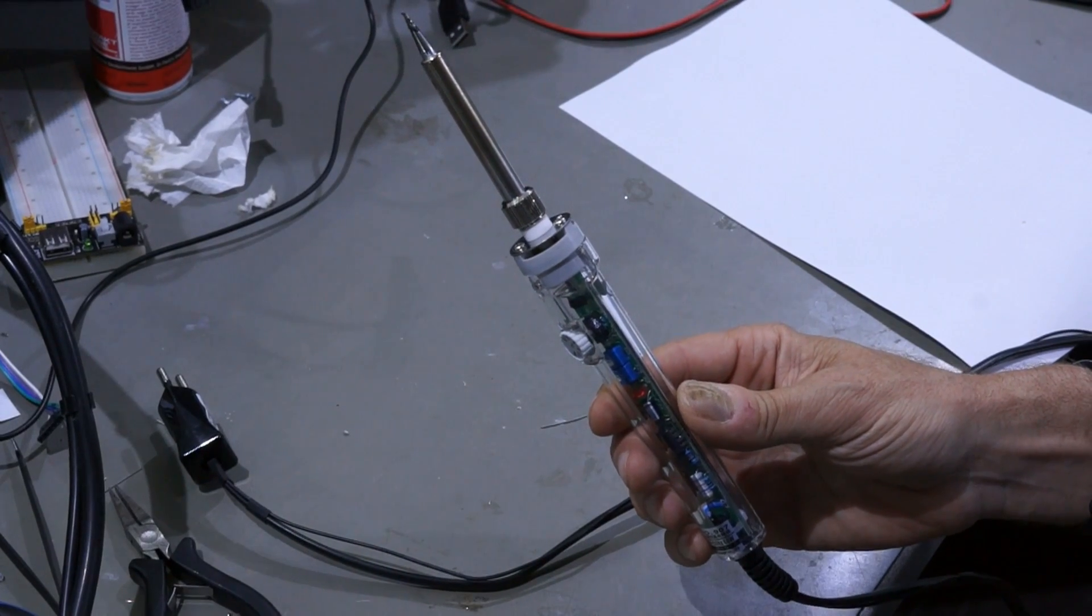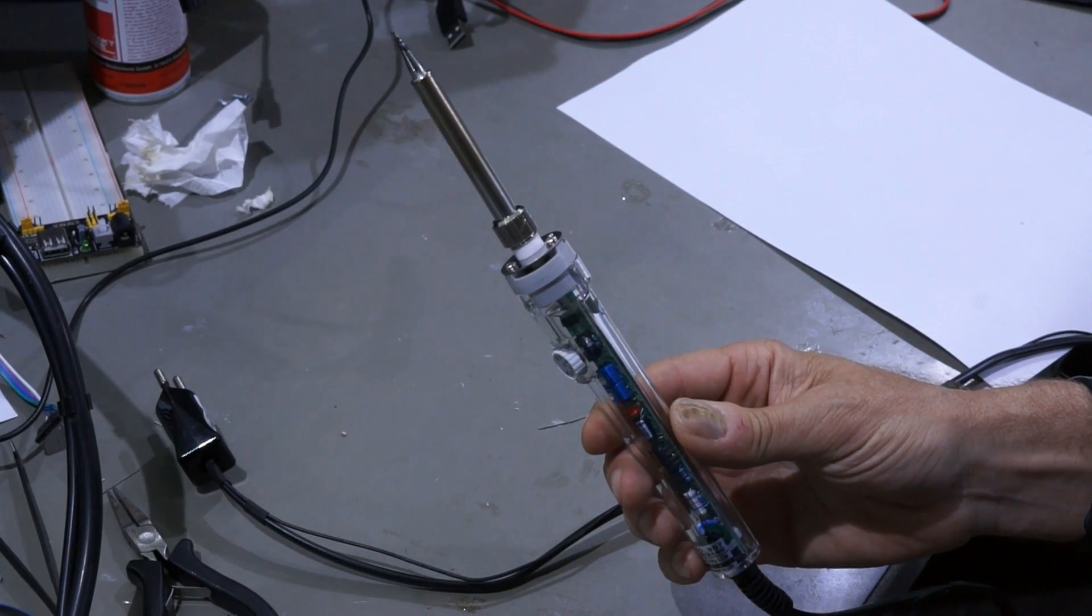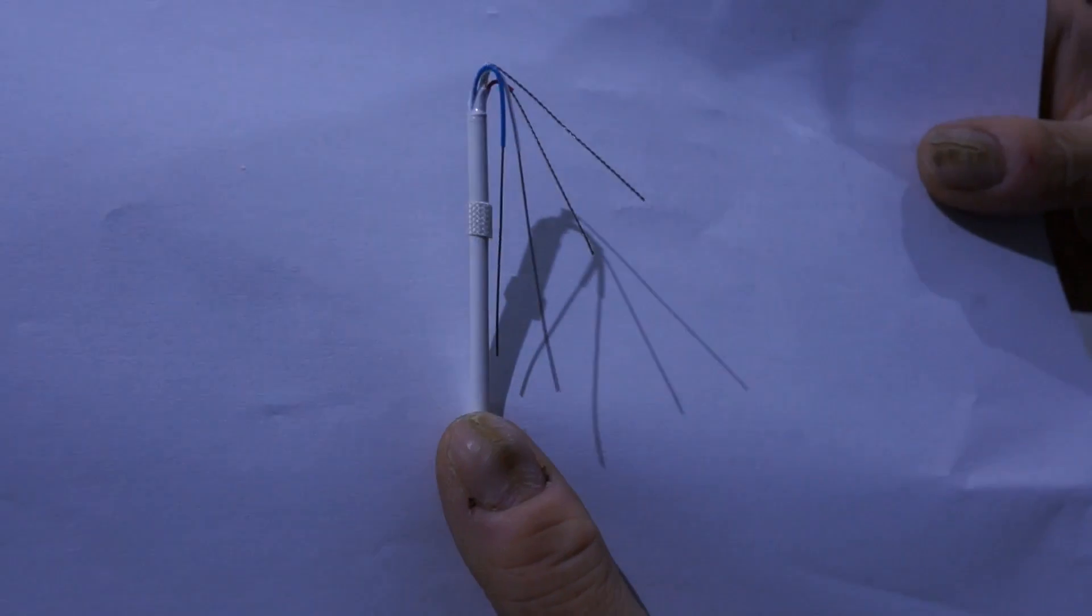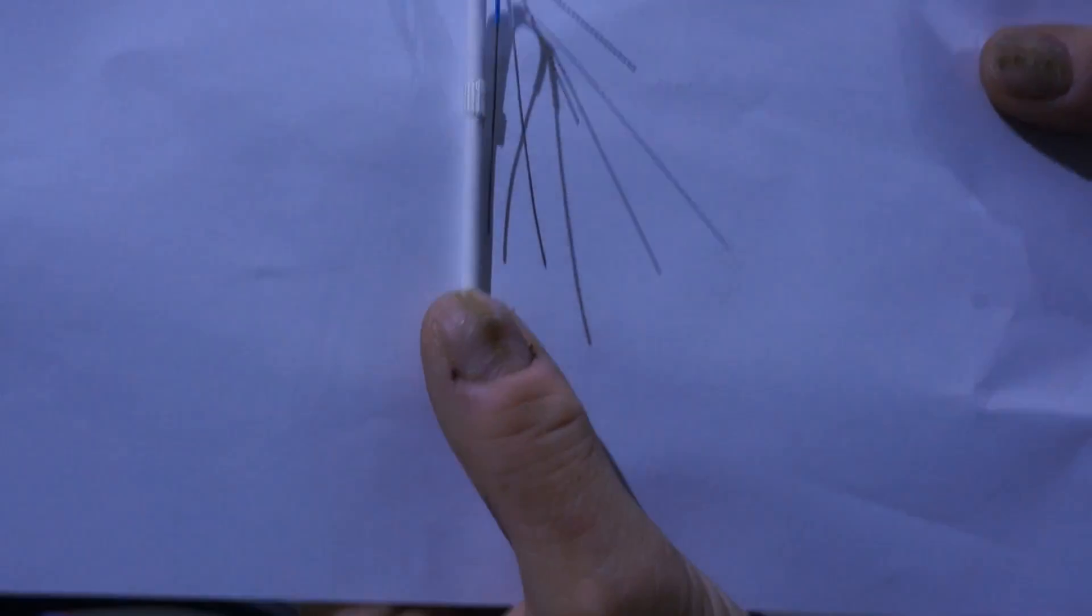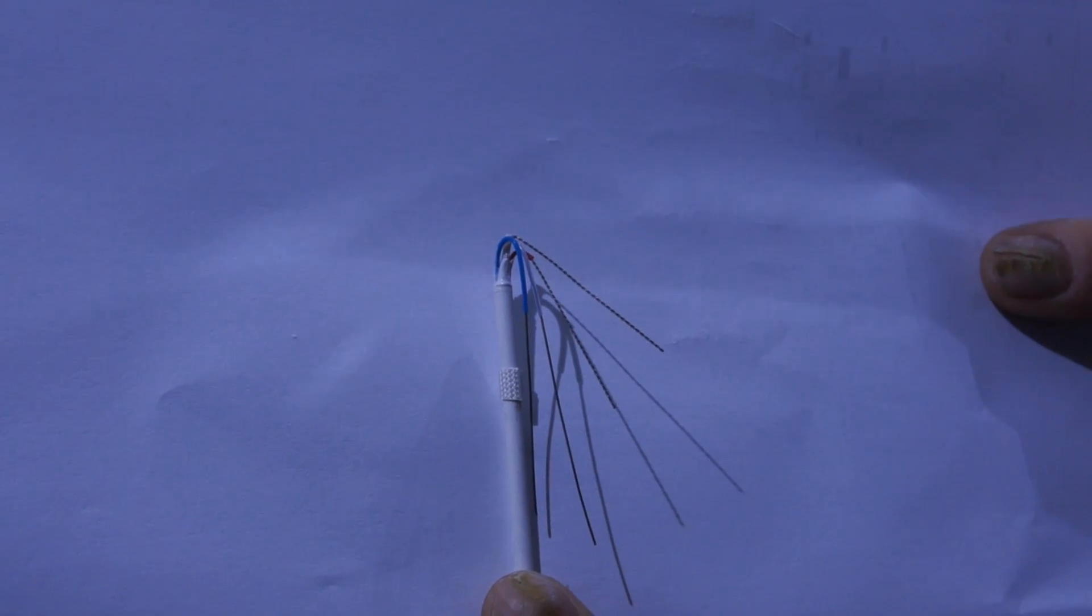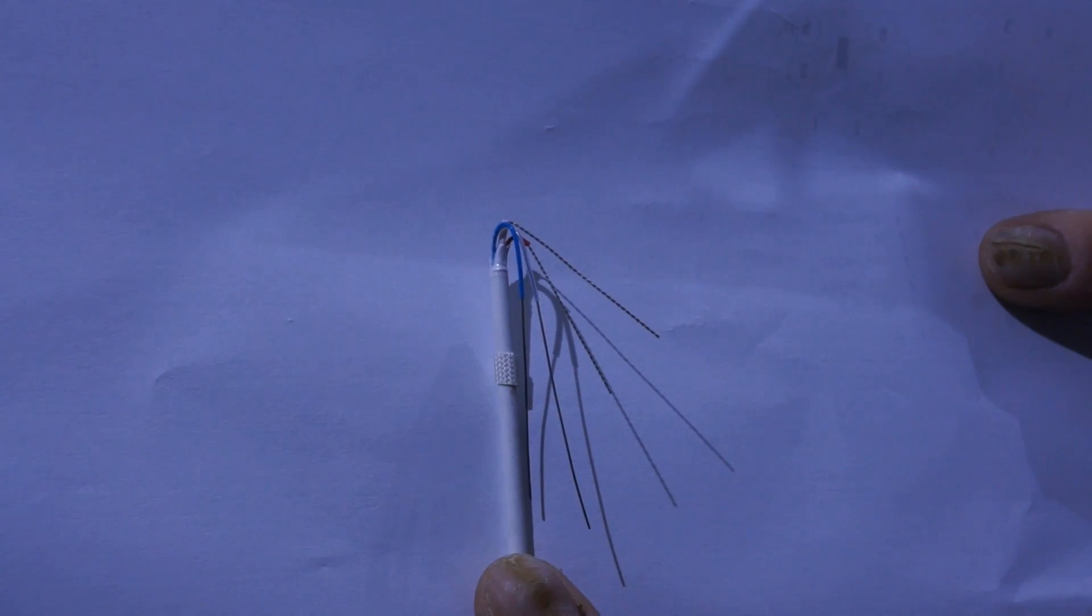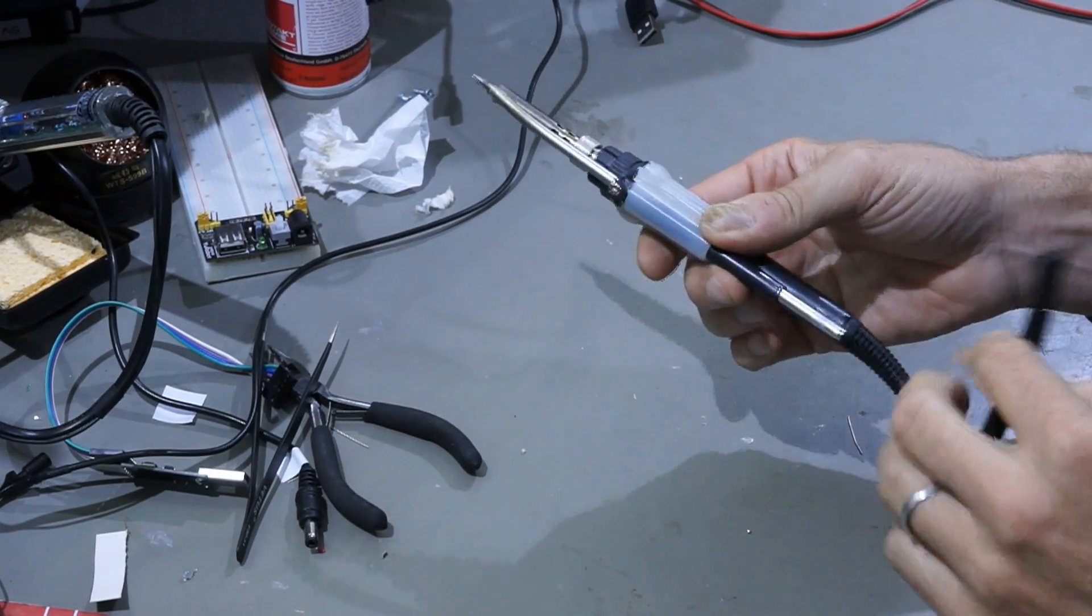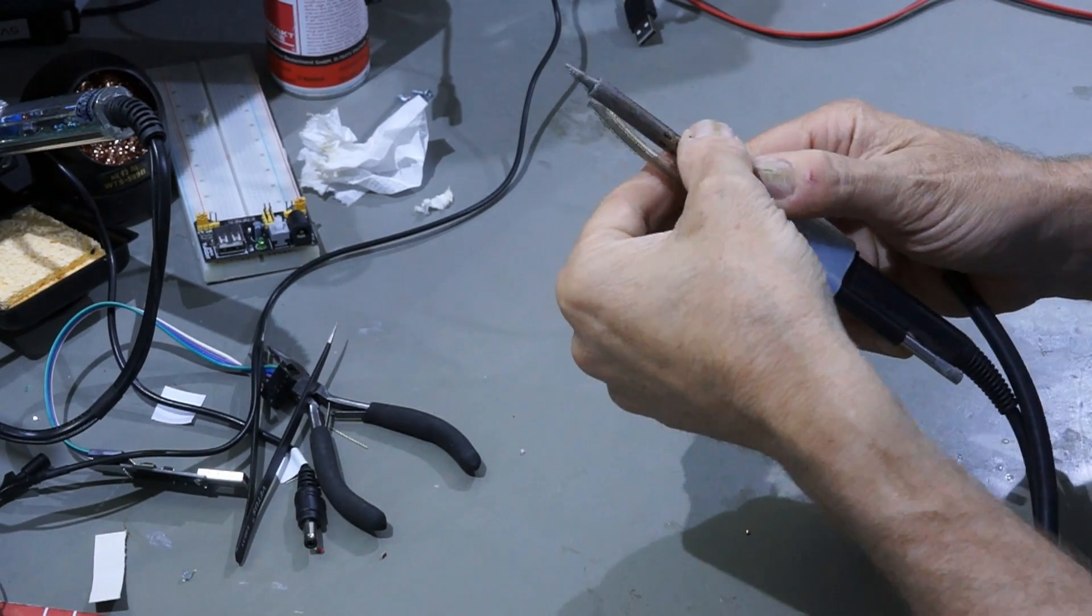Before you start, you need at least a second soldering iron to do the soldering during repair. If the heating element is defective, of course you need a replacement. You can find them on the internet. Now you can start with the disassembly of the soldering iron.